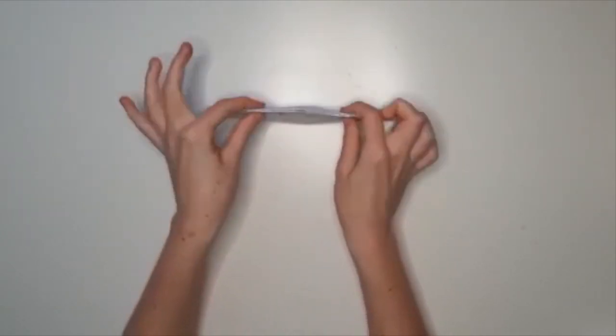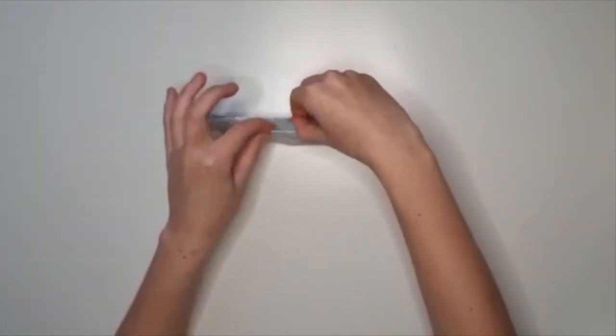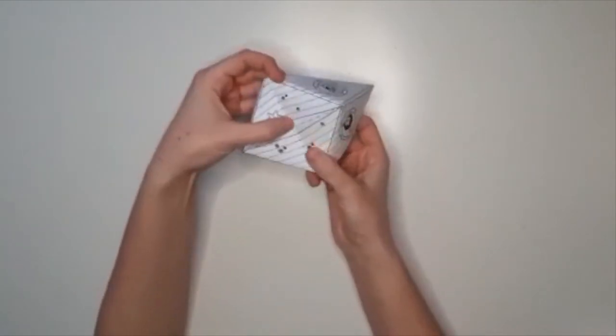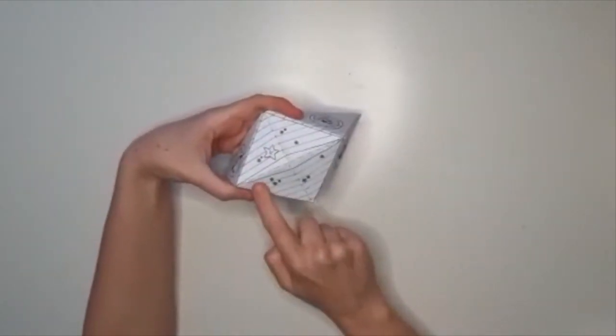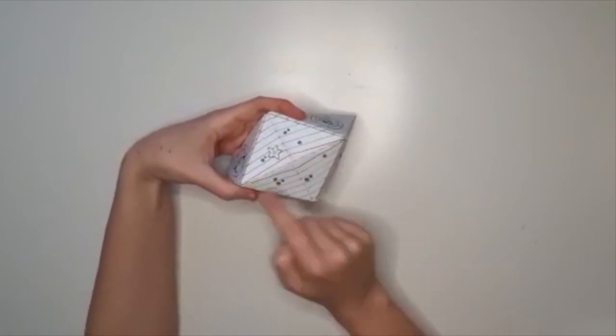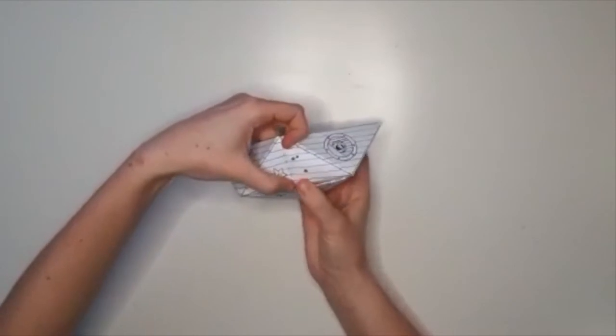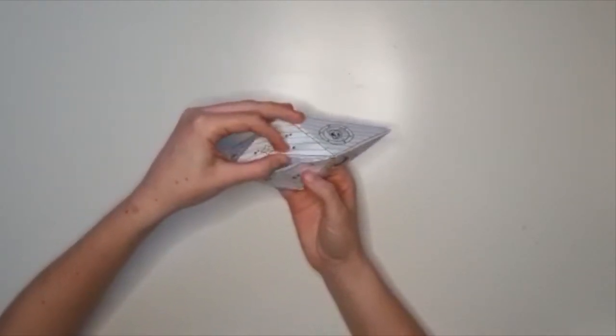Turn your boat upside down again and take a look at the bottom of it. There should be a gap in the middle. And there should be a long, thin diamond on the bottom of your boat. Between your thumb and forefinger, crease along this long, thin diamond.